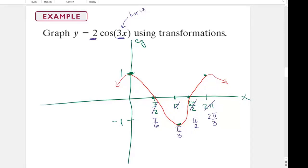And then the only last thing I have to do, what do I do with this two? This is vertical because it's outside of the function. We multiply the y values.